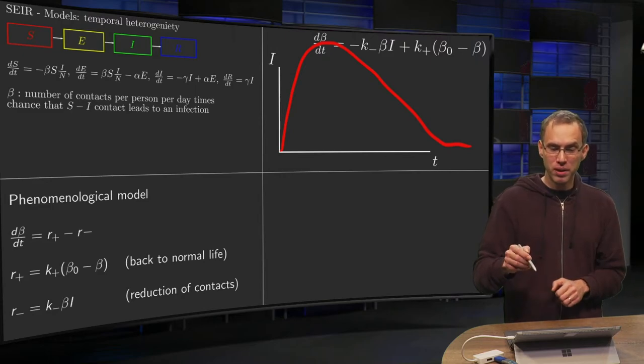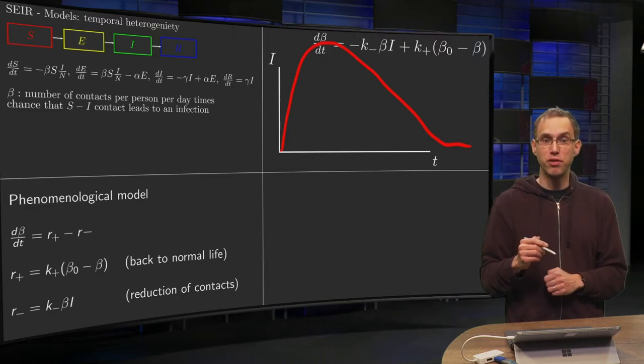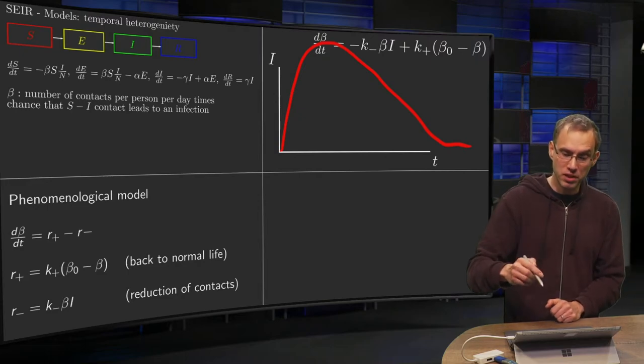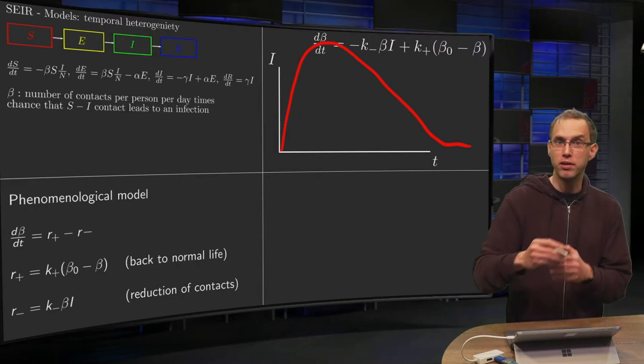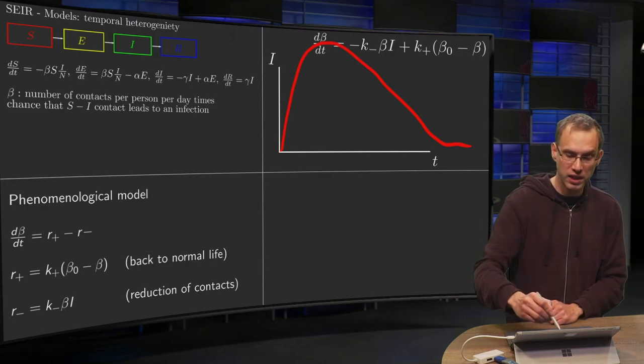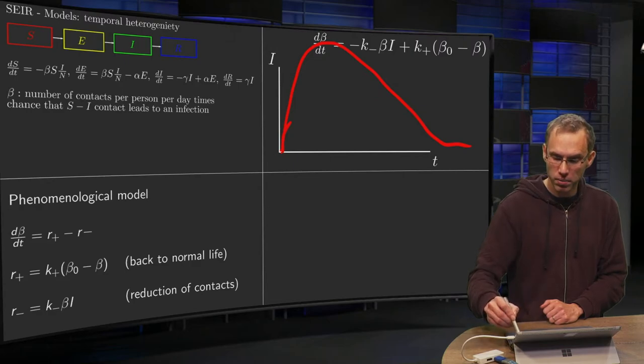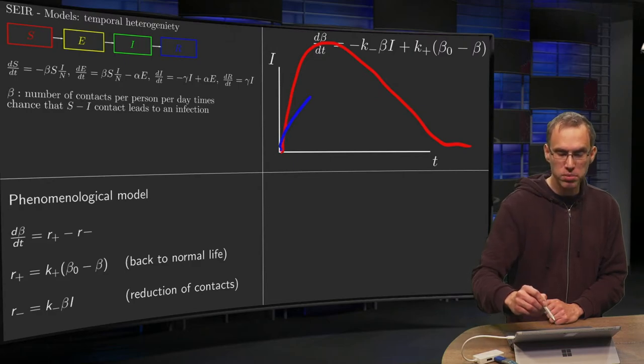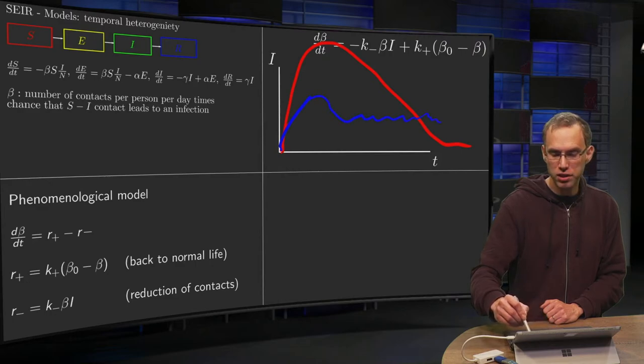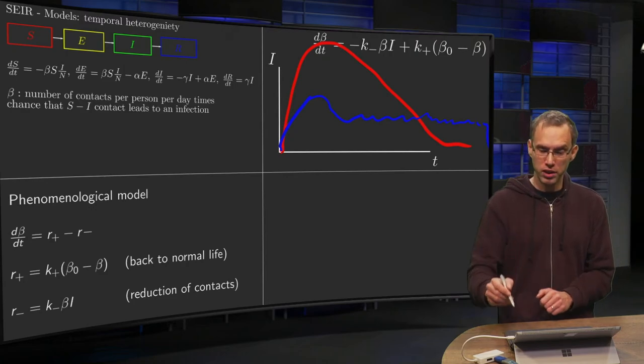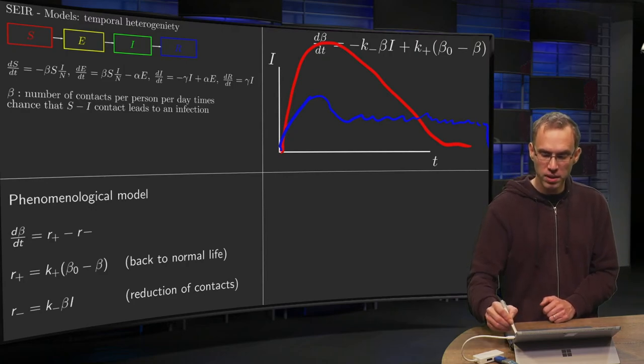What happens if you include those new terms for beta? I did some simulations—this is still part of a research project. You start the same. Initially, nothing happens. Then it decreases, and then you start to oscillate, and finally you go down again once you reach immunity.